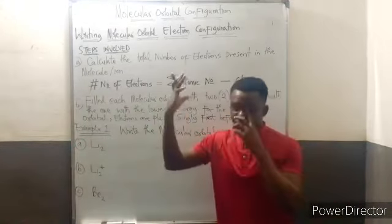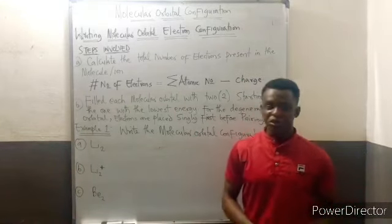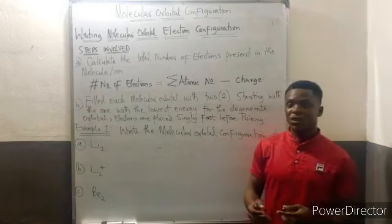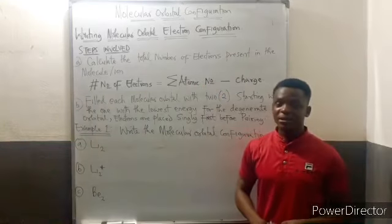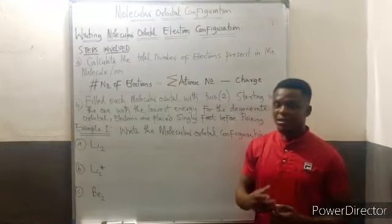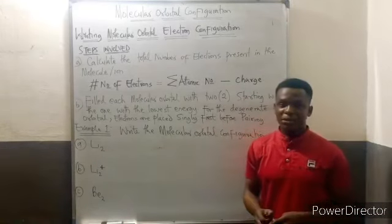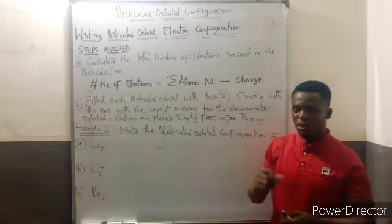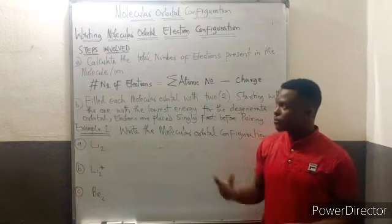We're looking at writing molecular orbital configuration. Just like we write electronic configuration for atoms, it's actually very important we also know how to write a molecular orbital configuration. As I said earlier, I've already given us the ordering of which molecular orbitals are filled. Electronic configuration has to do with the order in which electrons are filled.